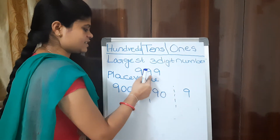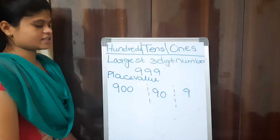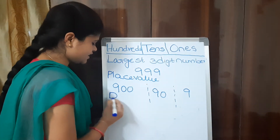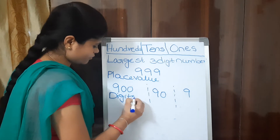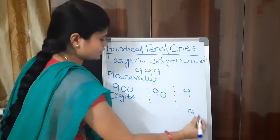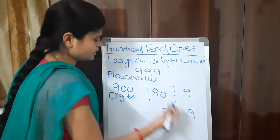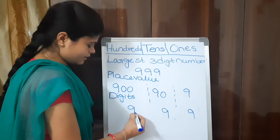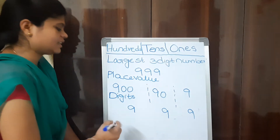This is called ones place, this is tens place, and this is hundreds place. How do people write 999 in digits? Nine ones, so write 9. Nine tens, so write 9. Nine hundreds, so write 9. What is the name of 999?